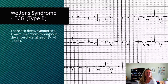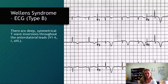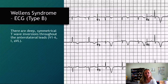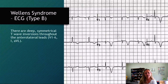Here's a Type B Wellens. The problem is many people see inverted T waves and just think ischemia, but this is actually a more sinister sign — yes, it is associated with ischemia, but these symmetrical inverted T waves indicate ongoing ischemia-reperfusion injury, that this part of the heart is quite damaged. This is an infarct that's about to happen.